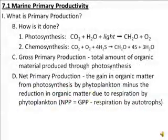How is primary productivity carried out? Primarily through the process of photosynthesis, but also through a process called chemosynthesis. Photosynthesis is where plants and other autotrophs take in carbon dioxide and water and use light energy to synthesize sugars or other carbohydrates, and of course another byproduct of that is oxygen.